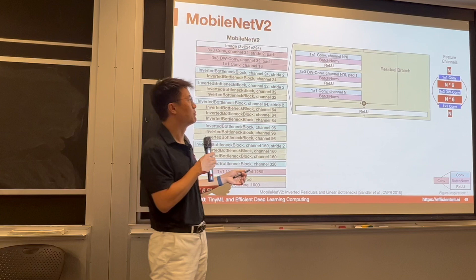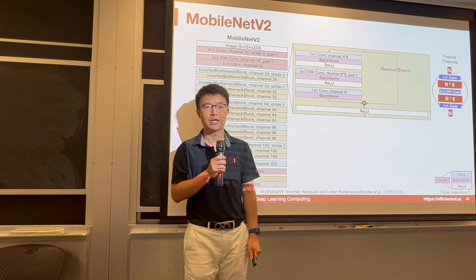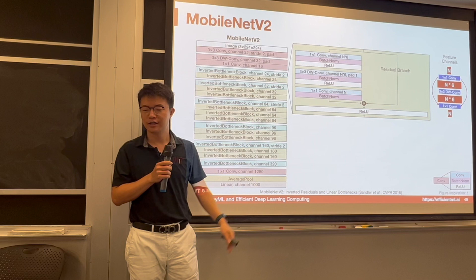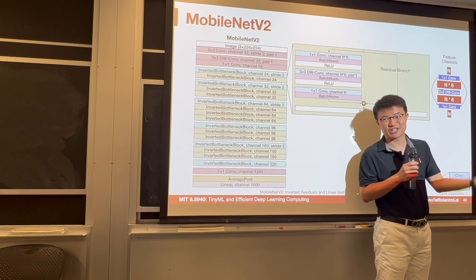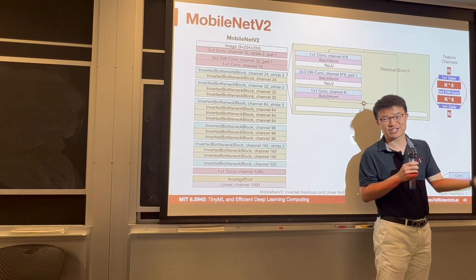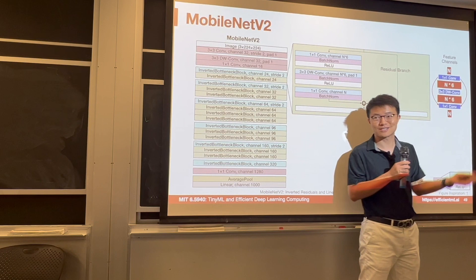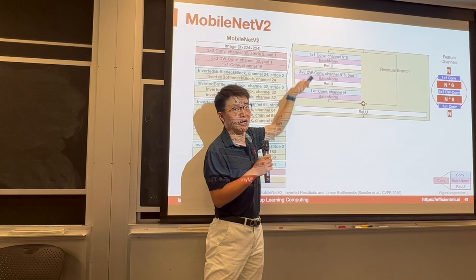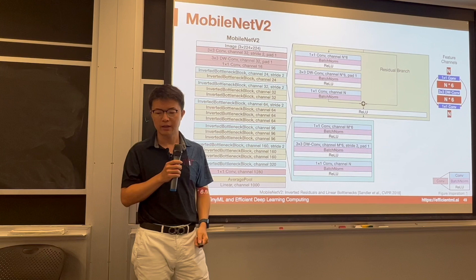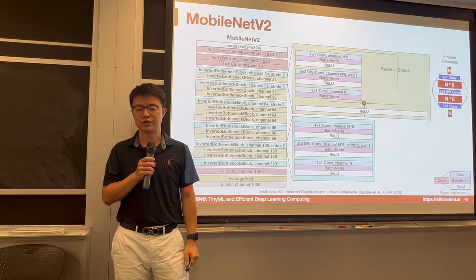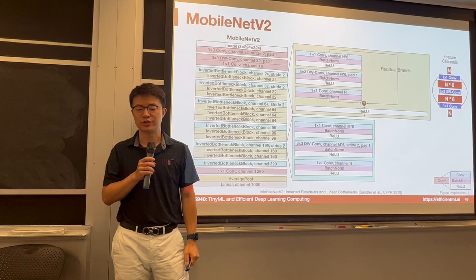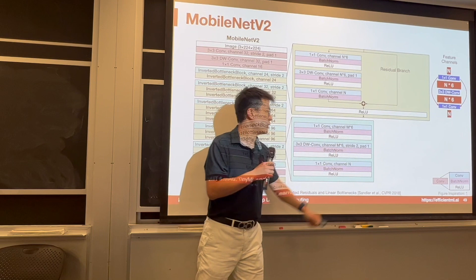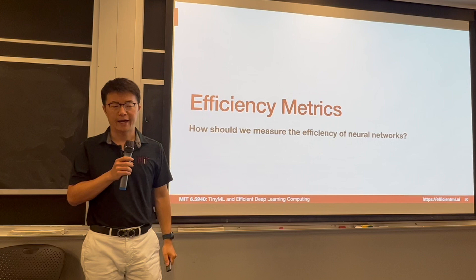MobileNet's main difference is using a 3×3 depthwise convolution — a special case of group convolution where groups equal the number of channels. It's very parameter and compute efficient. However, it has a large expansion ratio (6×) — changing channels from n to 6n — called an inverted bottleneck because the middle is larger rather than narrower. The structure is 1×1 conv, 3×3 depthwise conv, 1×1 conv. When stride is 2, MobileNet directly uses the depthwise conv with stride 2 without a residual branch.